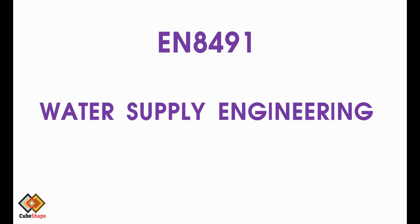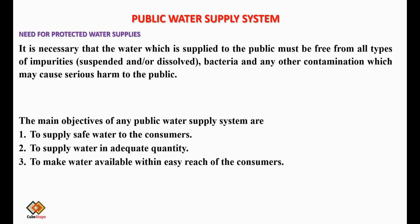First we would like to see about the need for a protected water supply in a public water supply system. It is necessary that the water supplied to the public should be free from impurities — either in suspended or dissolved form — and from microorganisms and any other contamination that causes serious harm to the public. We have to plan and build a water supply scheme which would provide potable water free from any kind of contamination.